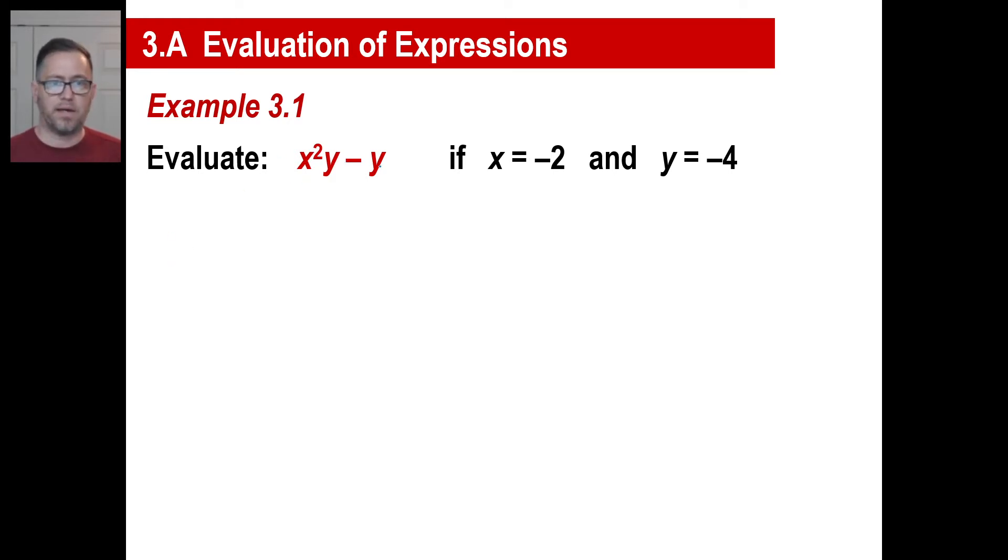On these, you need to be really accurate. Take your time, be very accurate, and write things down very carefully or else the negative signs will get you. Let's go. Evaluate x²y - y if x is negative 2 and y is negative 4. We're just going to stick this in here. If x squared, so I'm going to put parentheses - I need to tell myself that this number gets squared. So the negative 2 is going to get squared.